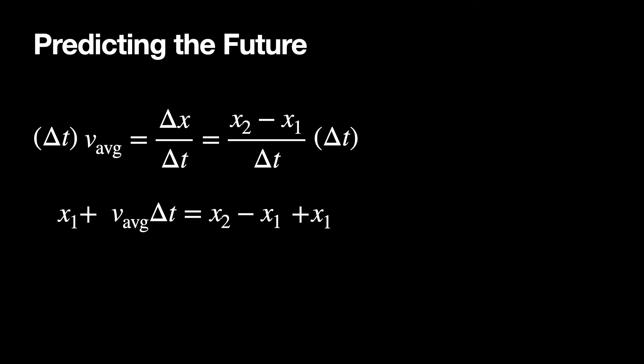So now we want to use this to predict the future. Let's say I take my equation v average is delta x over delta t, and I'm going to write out the delta x part as x2 minus x1 over delta t. If I multiply both sides by delta t, because you have to do that, right? I can't do it to just one side. I have to do it to both sides. So I do it to the right side and the delta t's are going to cancel, but they're not going to cancel on the left side. So I get v average delta t equals x2 minus x1. Now I can add x1 to the right side to get rid of that, but then I have to do that to the left side too. So after that, I get the following equation.